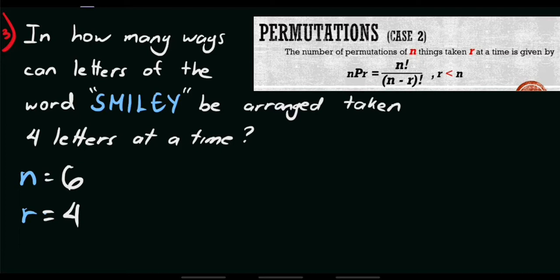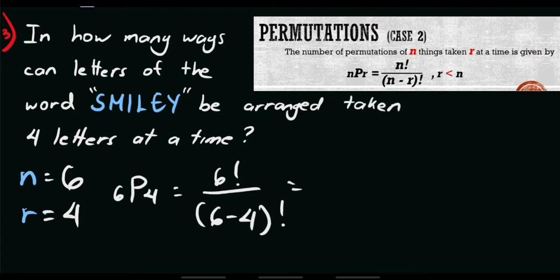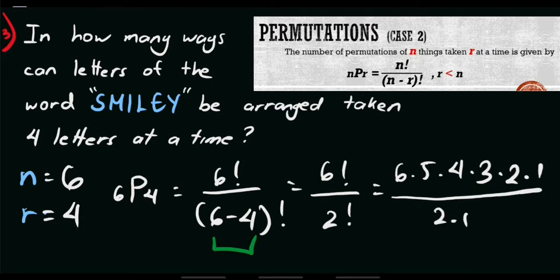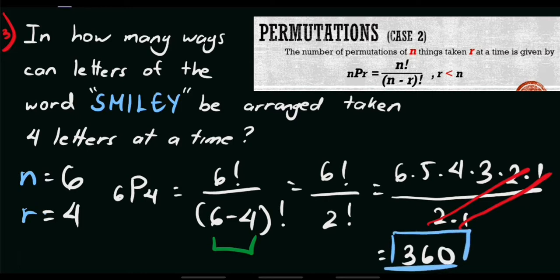Let's plug in all values and simplify. We have 6P4 equals 6 factorial divided by 6 minus 4 factorial. Subtracting, 6 minus 4 equals 2, so we have 6 factorial over 2 factorial. Expanding: 6 times 5 times 4 times 3 times 2 times 1, all over 2 times 1. Canceling the common factors, we're left with 6 times 5 times 4 times 3, which equals 360. Therefore, there are 360 ways to arrange the word SMILEY using 4 letters at a time.